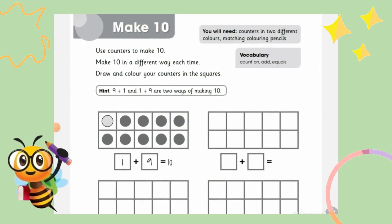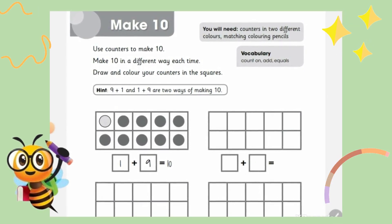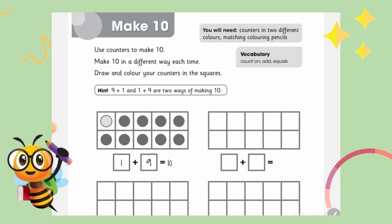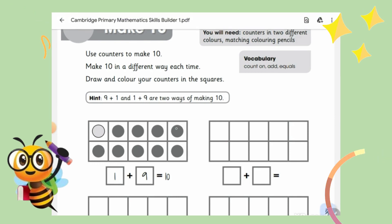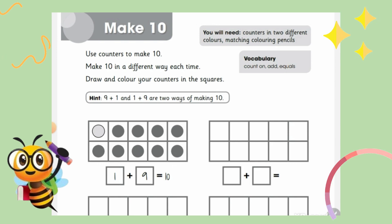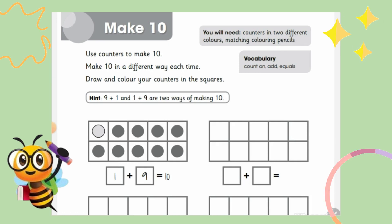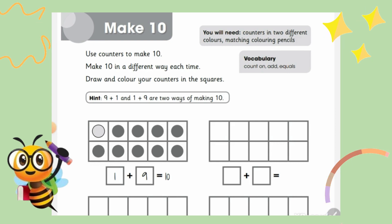Hi guys, welcome back to my channel Study B. Here I am with one more exercise: making tens. How are we going to make tens? We need to know what ten is. Ten is the number that when we count it makes ten. We will be needing counters in two different colors and matching color pencils to solve this exercise.